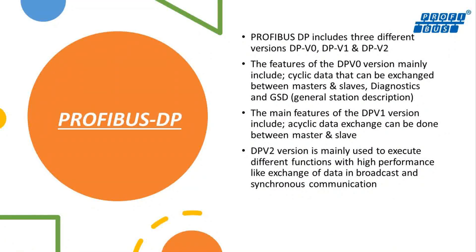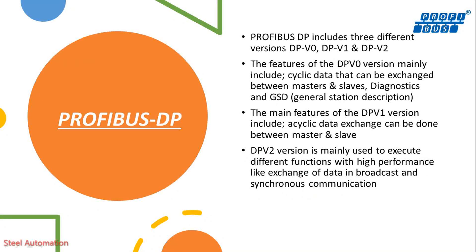Profibus DP includes three different versions: DPV-0, DPV-1, and DPV-2. The features of DPV-0 mainly include cyclic data exchange between masters and slaves, diagnostics, and GSD — General Station Description.